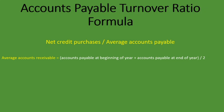Accounts payable at the beginning of the year is the same as accounts payable at the end of the previous year. So if you have 2017 and 2018 and are calculating the accounts payable turnover ratio for 2018, the average accounts payable will be the accounts payable at the end of 2017 plus accounts payable at the end of 2018, which you get from the balance sheet or statement of financial position, divided by two.